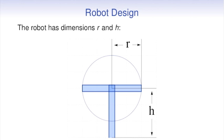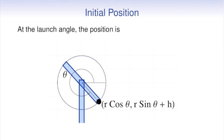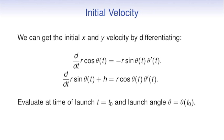Our robot is a rotating arm mounted on a stand of height h with radius r. At launch angle, the initial position is r cos theta, r sin theta plus h. The initial velocity we can get by differentiation.